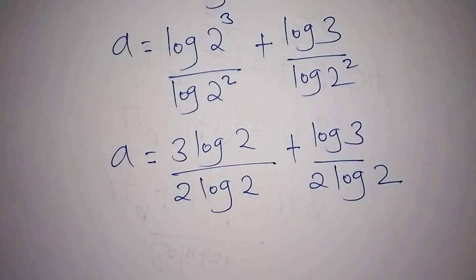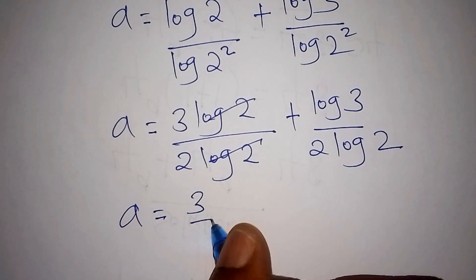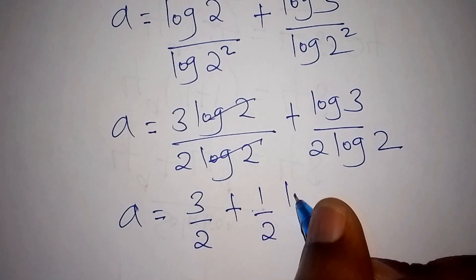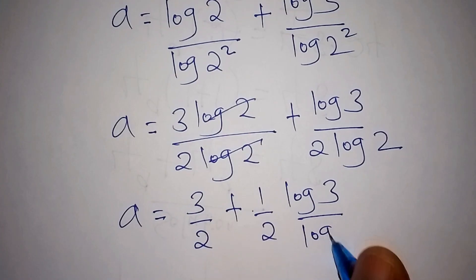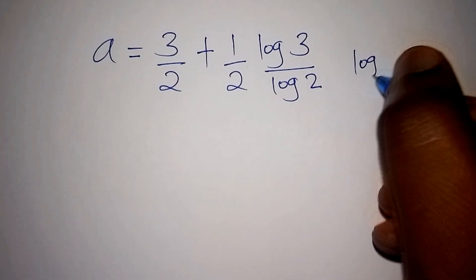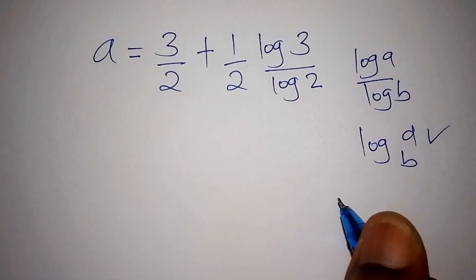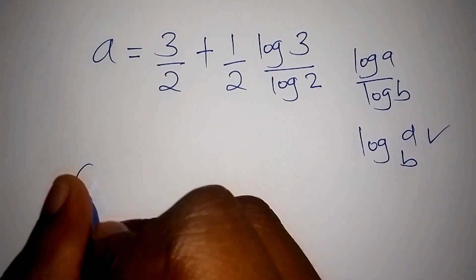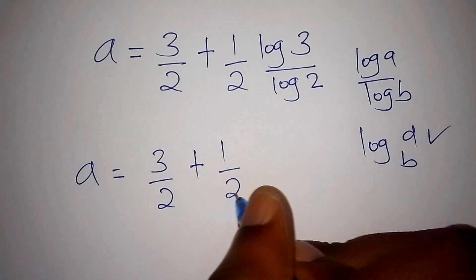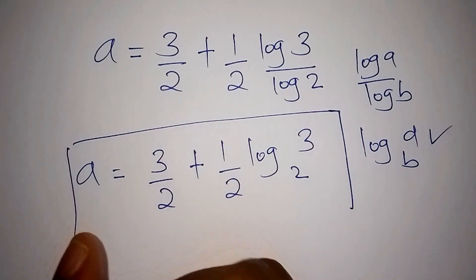We cancel the like terms: log 2 and log 2 cancel in the first fraction, giving 3 over 2. For the second term we have 1 over 2 times log 3 over log 2. Using the change-of-base identity — log a over log b equals log of a to the base b — we get a equals 3 over 2, plus one-half times log base 2 of 3.